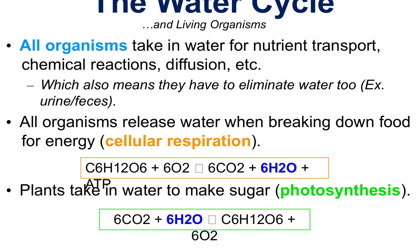All organisms take in water for nutrient transport — it drives chemical reactions, diffusion, and many other systems inside them. That also means organisms have to eliminate water, usually in excrement, urine, or feces. All organisms release water when they break down food through cellular respiration. When we take in carbohydrates or sugars and use oxygen, our waste products are carbon dioxide and water. Plants, on the other hand, take in our waste products — carbon dioxide and water — and through photosynthesis create sugar and release O2.